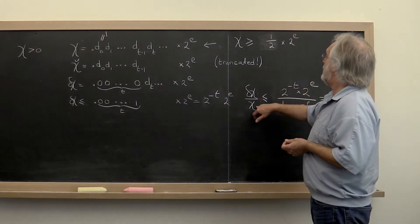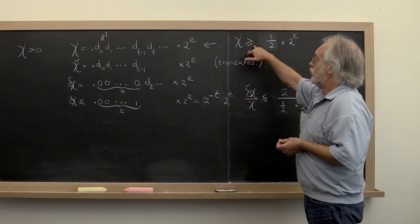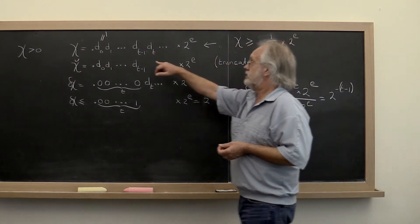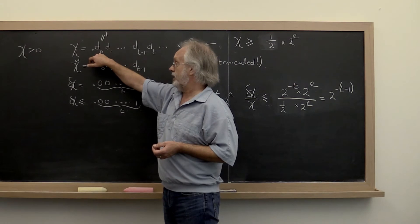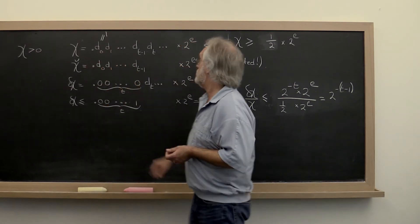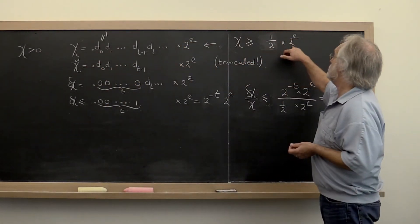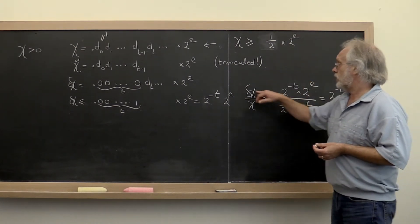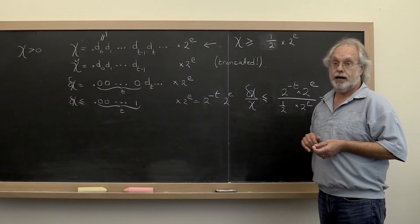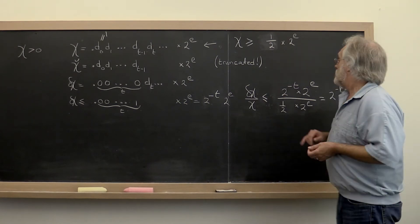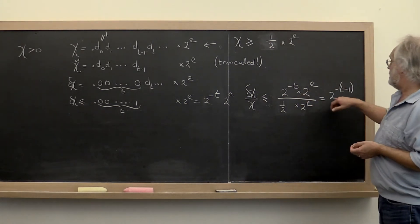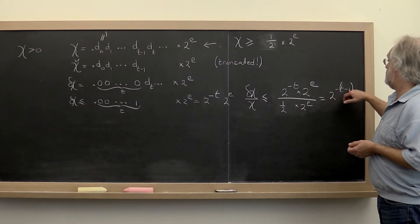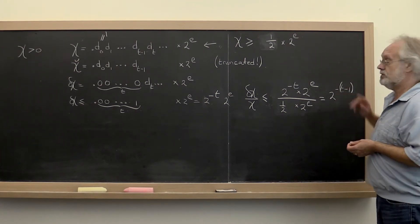And then chi we can get bound below by observing that the point 1 here really means 1 half because it's a binary digit. So we get 1 half times 2 to the e, and when we place that right here then we have a bound on the relative error in chi. And if you work that out you get that that's 2 to the minus t minus 1, quantity t minus 1.